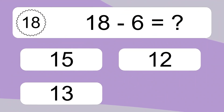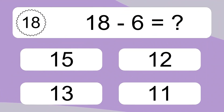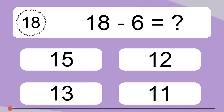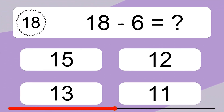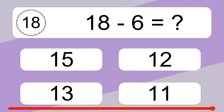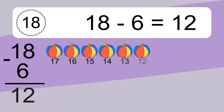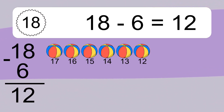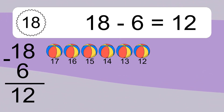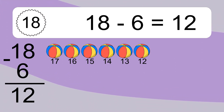18 minus 6 equals what? 18 minus 6 equals 12. Let's count it. 17, 16, 15, 14, 13, 12.